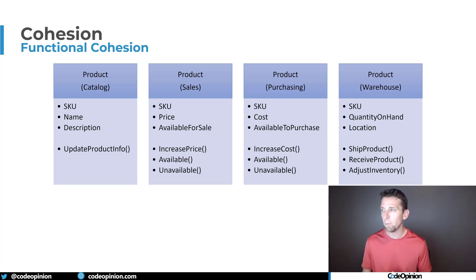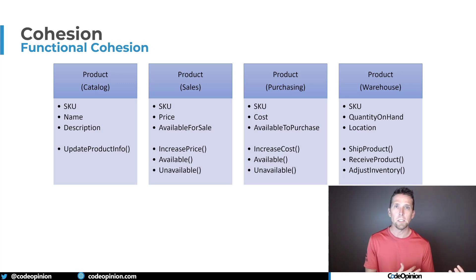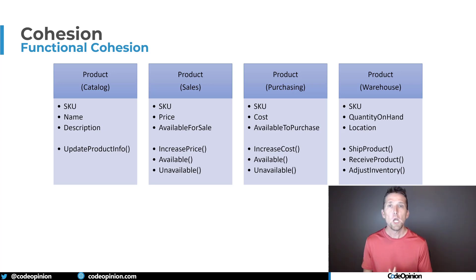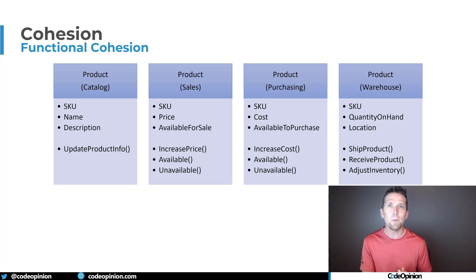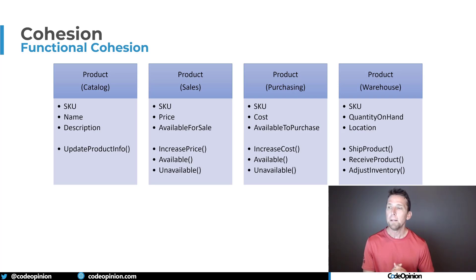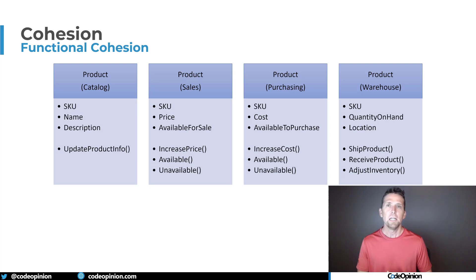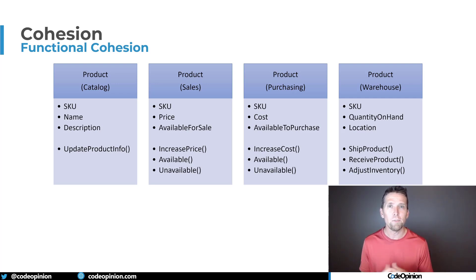But if you start thinking about the capabilities of what your system's providing — the actual behaviors — then you start splitting things up. The warehouse has the idea of shipping and receiving product and doing inventory adjustments, focused on quantity on hand and location. Sales is thinking about customers and the sale price. Purchasing is more vendor-centric, thinking about the manufacturer and the cost. Then there's generic catalog information like name and description. It isn't one product — there are multiple ideas or concepts of a product that exist within our system, driven by the capabilities of those specific boundaries.